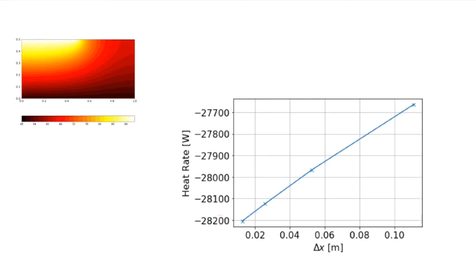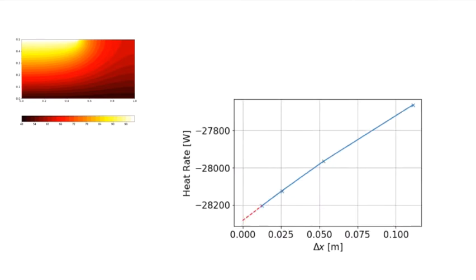My change in my predicted heat rate is getting smaller and smaller. Well, I can extrapolate this down to a delta x of 0 quite easily. And I can get a predicted heat rate when delta x goes to 0. Of course, that's a relatively small change compared to the big change we had when our mesh was too coarse. So we could keep making a finer mesh or we can estimate it based on extrapolating this down to our delta x is 0.